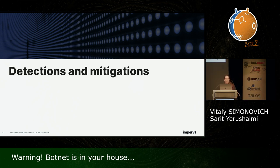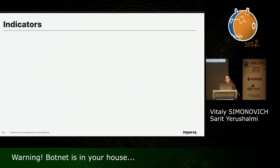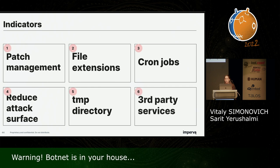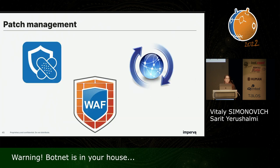Now we'll talk about detection and mitigations. We saw the analysis of Kashmir Black, and as you know, in the last couple of months we've seen high-profile vulnerabilities like log4shell and spring4shell that attackers are using to create new botnets. We'd like to share six detection and mitigation techniques you can apply. First, patch management: attackers use known CVEs to create botnets. It's easy to take a published PoC and automate the exploitation phase. You have two options: update and patch your vulnerable software, though this can be hard as it was with log4shell, or especially when a server is in production.